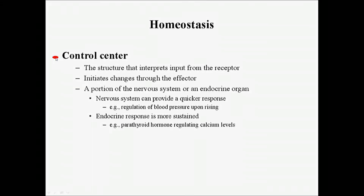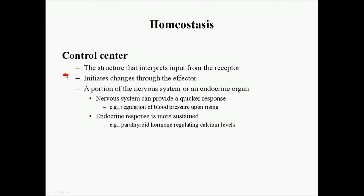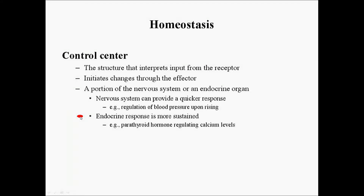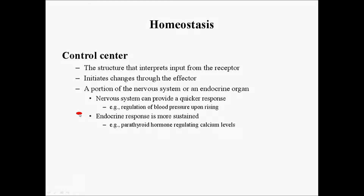The control center is a structure that receives input from the receptor, interprets it, and then initiates a change by sending a message to the effector. In the body, there are a couple of different control centers. One is the nervous system and the second is the endocrine system. The nervous system is a relatively fast-acting control system, whereas the endocrine system is a slower, more sustained control system.